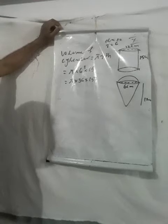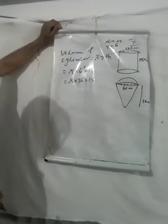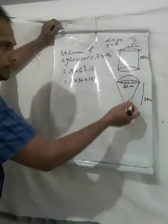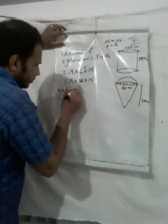Now we need to find the radius of the ice cream cone. The total volume of one ice cream equals the volume of the conical portion plus the volume of the hemispherical portion. So volume of ice cream equals volume of cone plus volume of hemisphere.